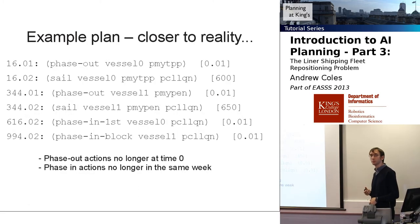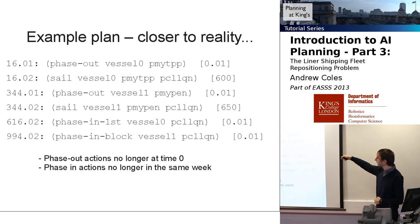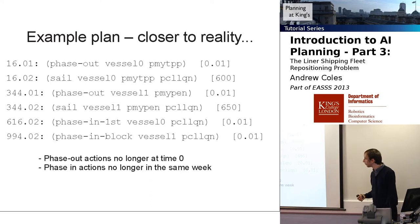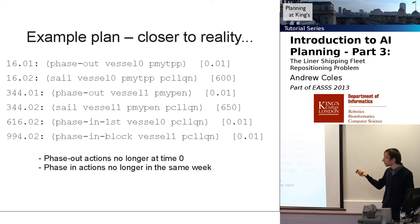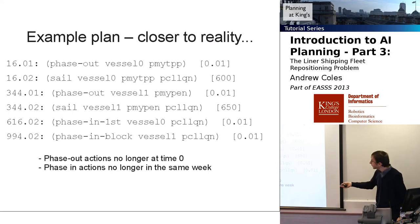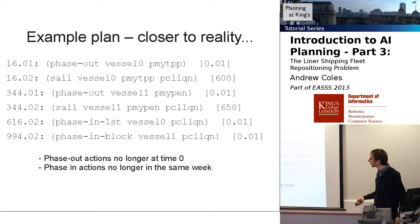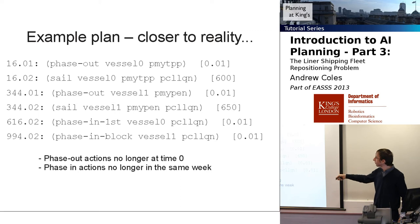Here's an example plan closer to reality. We phase out not at time zero anymore, but at the time when the vessel was available to phase out at that port. And phasing in must come in separate weeks — in the first case we phased in at about time 600 and the next one at about 650, but now there's a much bigger gap, and you have to wait until the end of the week before you can phase in the next one.